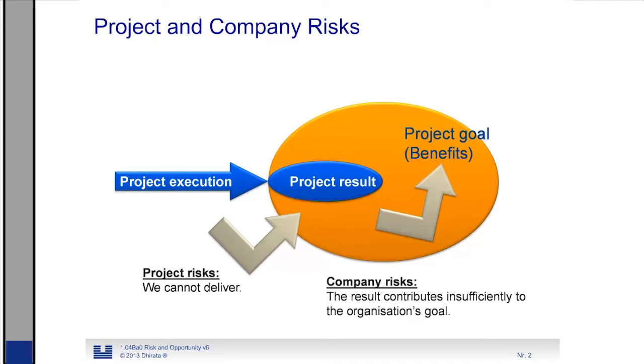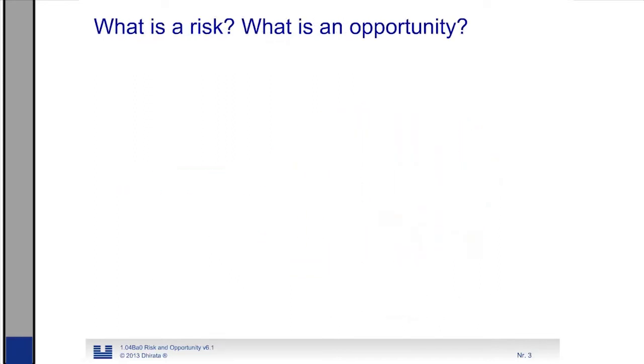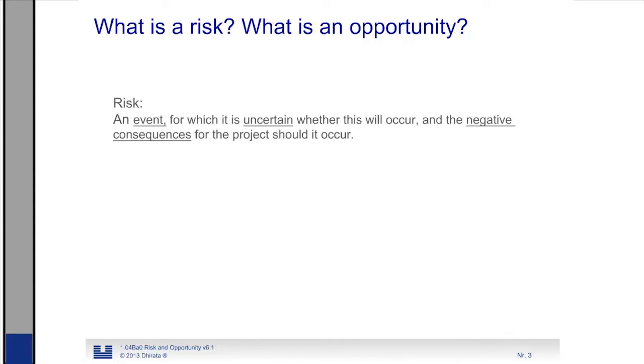Now, what do we mean when we talk about a risk or when we talk about an opportunity? A risk is an event for which it is uncertain whether this will occur and the negative consequences for the project if it should occur. Now, an opportunity is the same as a risk, but then we are talking about positive consequences. Look at the underscores. It is an event, an uncertain event, and it is something with negative consequences. We often talk about the impact of the project. These two together form what we call a risk, and when it's something positive, they form together an opportunity.